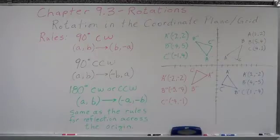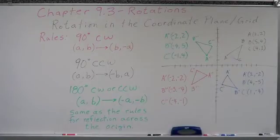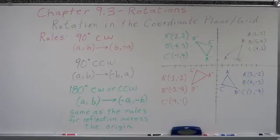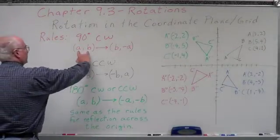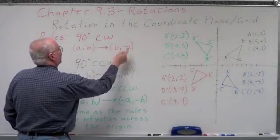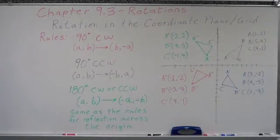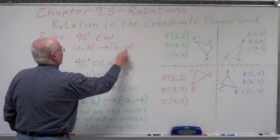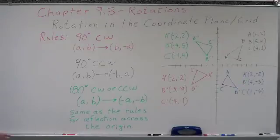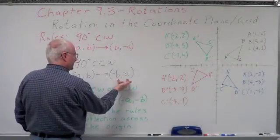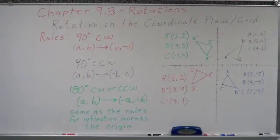The last part we want to talk about on rotations is rotations within the coordinate grid. We're going to use 90 degrees to show you the rules for rotating things in the coordinate grid. If you're on a coordinate grid and rotating 90 degrees, this is an easy way to figure out where you need to put your points. If I want to rotate 90 degrees clockwise — to the right — I take my original X and Y, call them A and B, flip them, and negate the new Y. If I want to rotate 90 degrees counterclockwise — to the left — I do the same converse and then negate the new X.